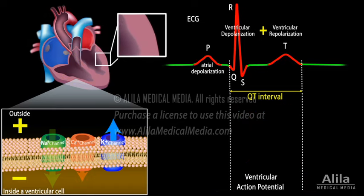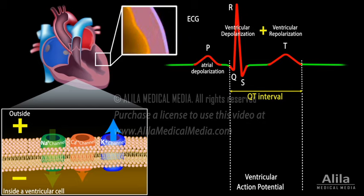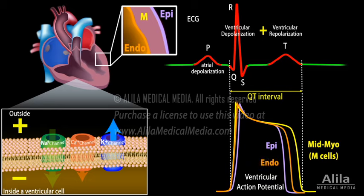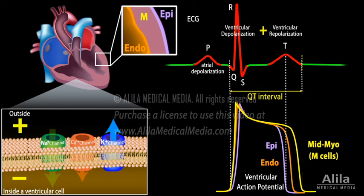The rate of repolarization is slightly different for the three layers of the heart wall: the epicardium, midmyocardium or M cells, and endocardium. Because M cells have less potassium channels and more sodium channels, they repolarize more slowly. On an ECG, the peak of T wave reflects repolarization of epicardial cells, while the end of T wave corresponds with repolarization of M cells.